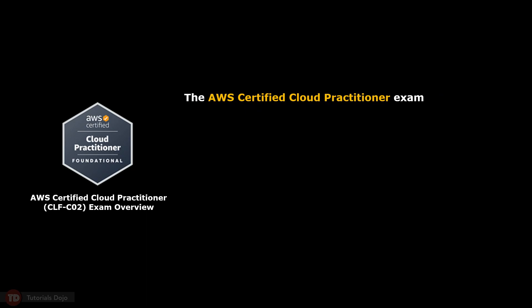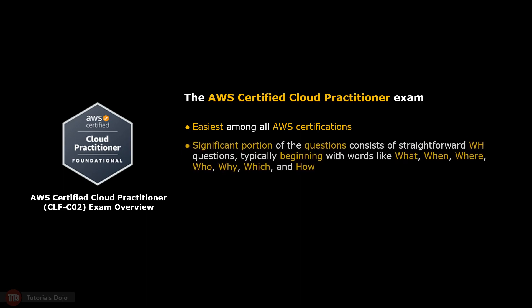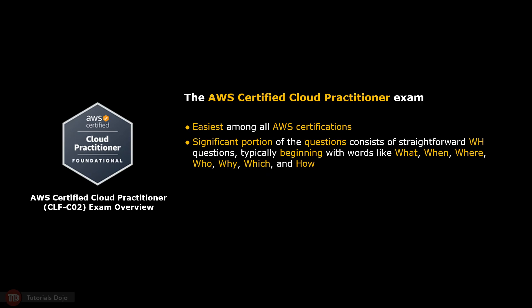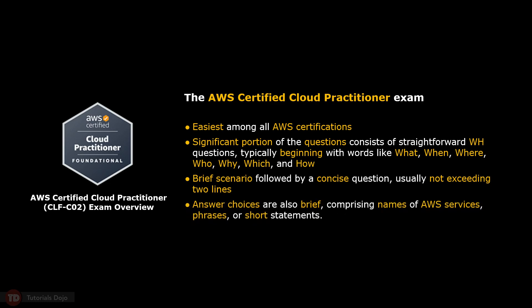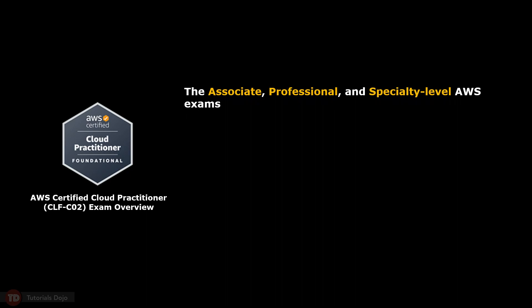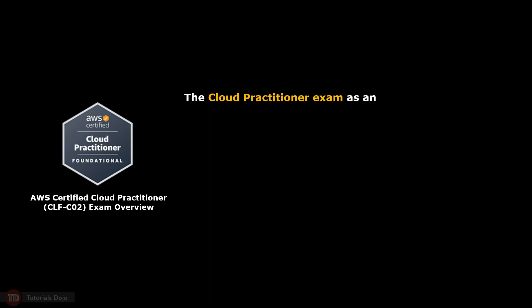The AWS Certified Cloud Practitioner exam stands out as the easiest among all AWS certifications. Its relative ease lies in the fact that a significant portion of the questions consists of straightforward WH questions, typically beginning with words like what, when, where, who, why, which, and how. Some items provide a brief scenario followed by concise questions, usually not exceeding two lines. The answer choices are also brief, comprising names of AWS services, phrases, or short statements. In contrast, the associate, professional, and specialty level AWS exams present candidates with intricate scenarios and lengthier answer choices, making the Cloud Practitioner exam notably manageable to pass.